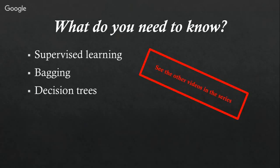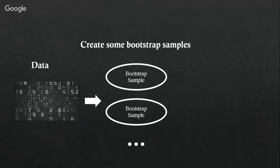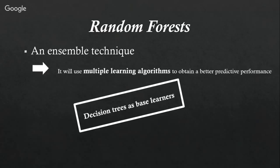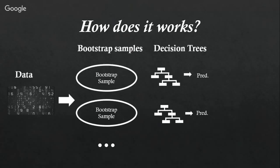This means that it will use multiple learning algorithms to obtain better predictive performance. As you might deduce from the name, it will use decision trees as base learners. We take some data for which we create bootstrap samples, then for every bootstrap sample we create a decision tree, which results in a prediction. These predictions are then aggregated using majority voting and result in a final probability.